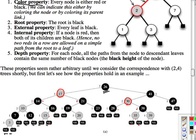So again, there are no two reds in a row. For the depth property, all paths from any given node to descendant leaves have the same number of black nodes. Starting at the root and counting: there are one, two black nodes before you hit the leaf along every path — and so on for all paths in the tree.